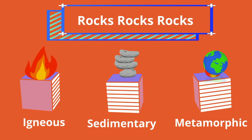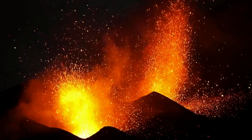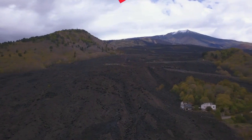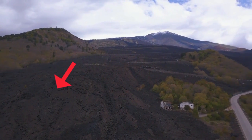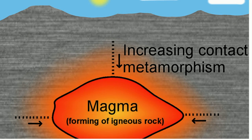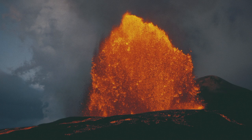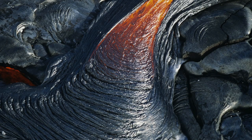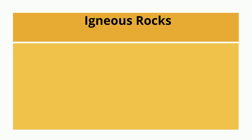Up first will be igneous rocks, derived from a Greek word for fire. Igneous rocks form from hot molten rock that cools and then solidifies. Igneous rocks may form from magma, which is found inside the earth, or lava, which is molten rock on the surface of the earth. There are two major types of igneous rocks: intrusive and extrusive.